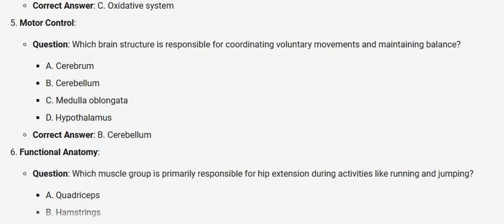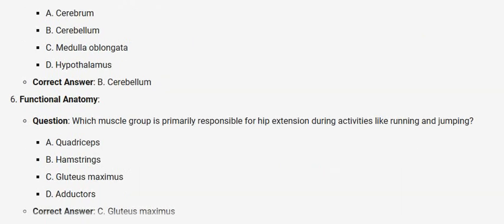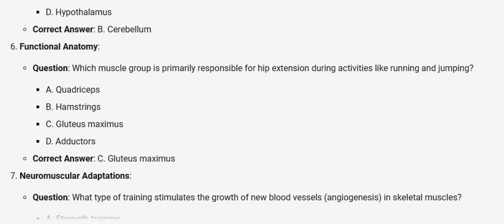Functional anatomy. Question: Which muscle group is primarily responsible for hip extension during activities like running and jumping? A. Quadriceps. B. Hamstrings. C. Gluteus maximus. D. Adductor. Correct answer: C. Gluteus maximus.